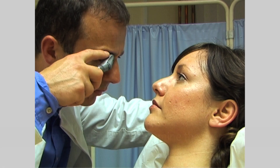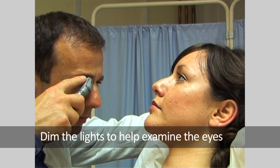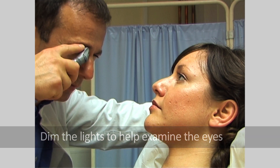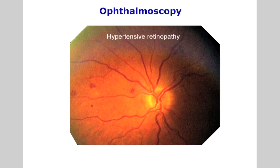The retina should be examined to assess any visible changes to the vessels. This is especially relevant in patients with peripheral vascular diseases such as in diabetics, in atherosclerosis, and in hypertensive patients. Examination of the eyes is covered in the neurological assessment DVD.